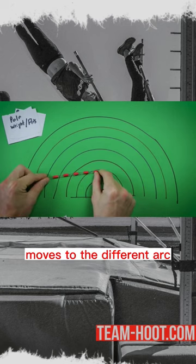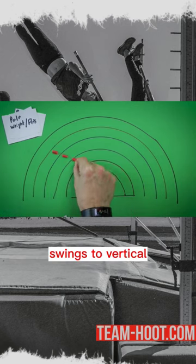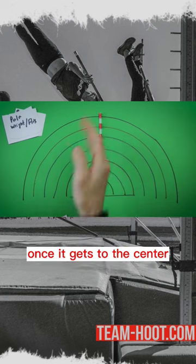The pole bends, moves to the different arc, swings to vertical and then it shoots up to vertical once it gets to the center.